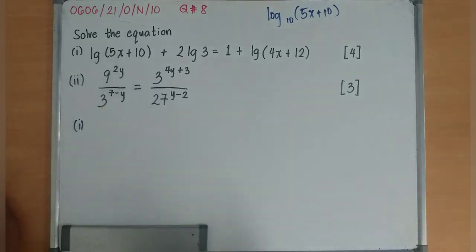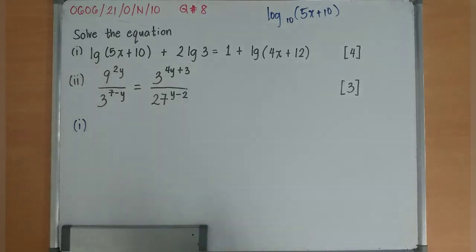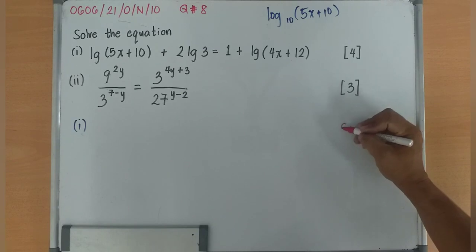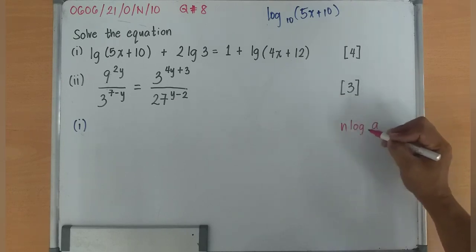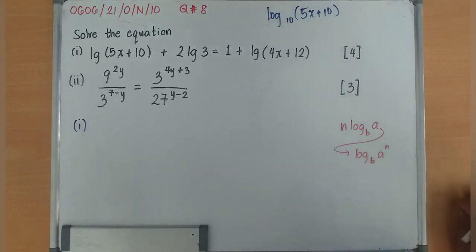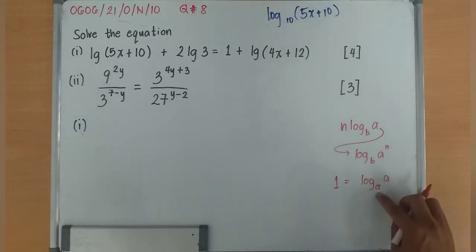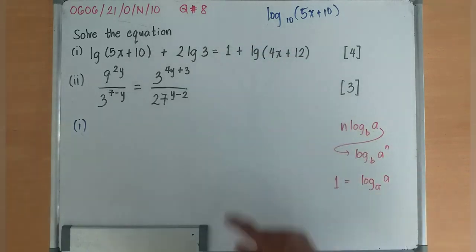One thing that you need to understand about logarithm is you need to have the basic concepts about laws of logarithm. If you are going to recall, N logarithm of A in the base B can also be written as logarithm of A to the power of N in the base B. And 1 is equivalent to logarithm of A in the base A. Since the base is 10, this should be LG 10.